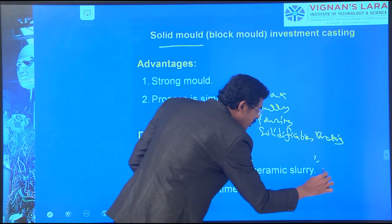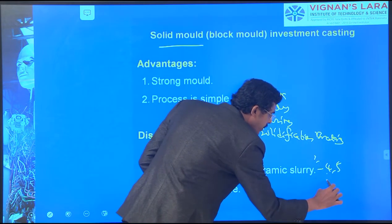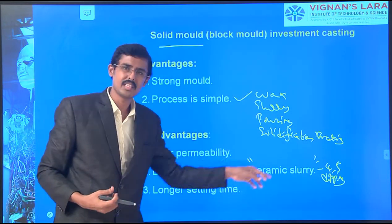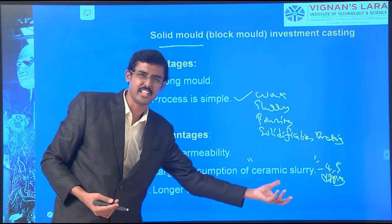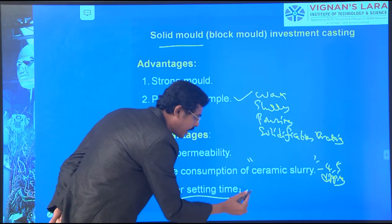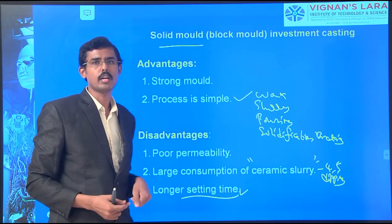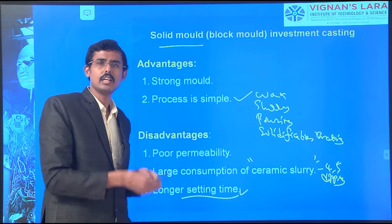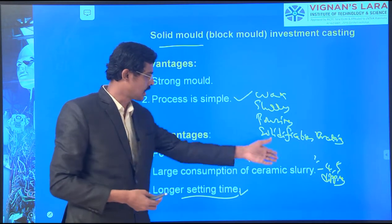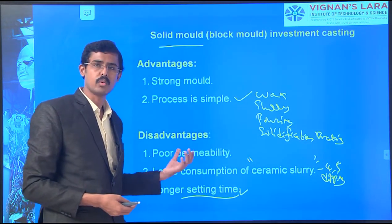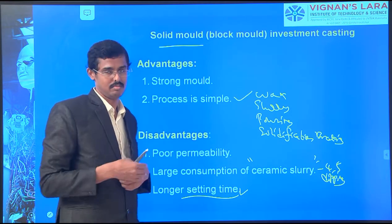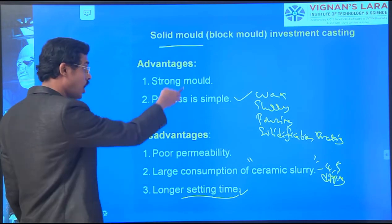Four to five times dipping is done. This ceramic slurry cost increases. There is also lower settling time - it takes more time to dry compared to sand. Cost is high. But the advantage is that all alloy systems can be used and a strong mold is obtained.